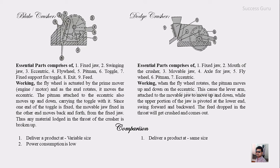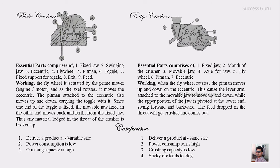The second point is power consumption: the Blake crusher consumes a very low amount of power compared to the Dodge crusher. The third point is crushing capacity: the Blake crusher has a very high crushing capacity — it can crush a large amount of material in a short interval of time. In contrast, the Dodge crusher has a very low crushing capacity because material must reach a uniform size before discharge, requiring more time. Additionally, sticky ore may clog the Dodge crusher but causes less problem in the Blake crusher.